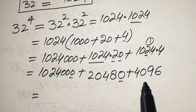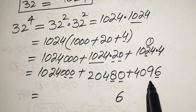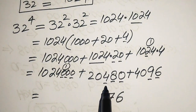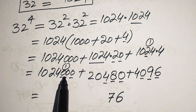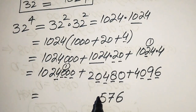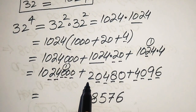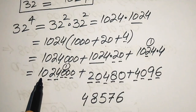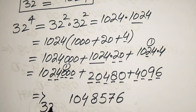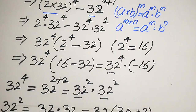Now in the next step we sum up all of these values: 0 plus 0 plus 6 is 6; 0 plus 8 is 8; 8 plus 9 is 17, write 7 carry 1; 0 plus 4 is 4, 4 plus 0 is 4, 4 plus 1 is 5; 4 plus 0 is 4; 4 plus 4 is 8; 2 plus 2 is 4; then 0 and 1 remaining. So 32 to the power of 4 equals 1,048,576.